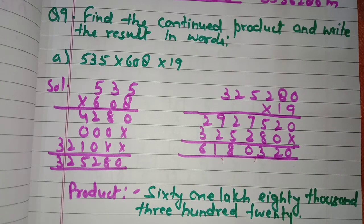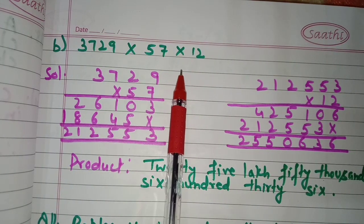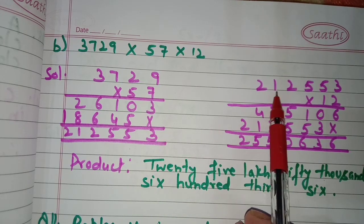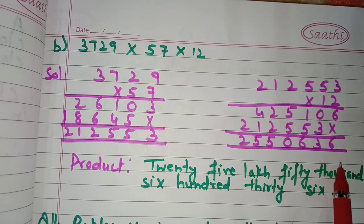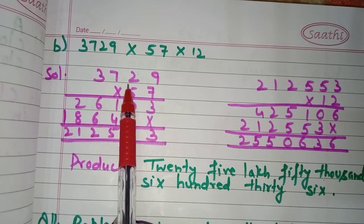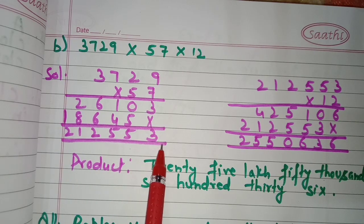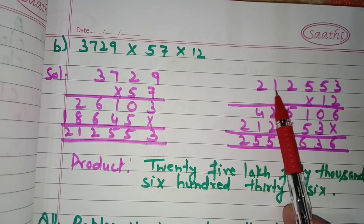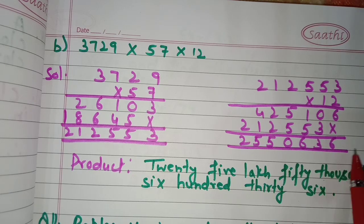Part b: again we are given three numbers to find the continued product. We multiply 3729 by 57 and get 2,12,553. Then we multiply 2,12,553 by 12 and get 25,50,636. This is the final continued product.